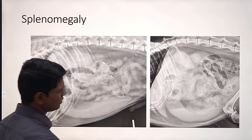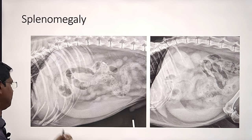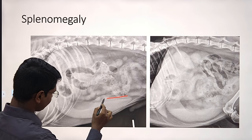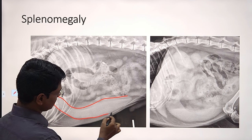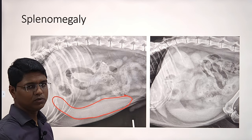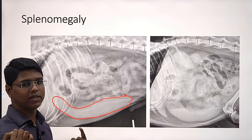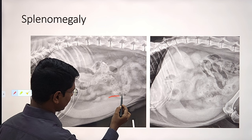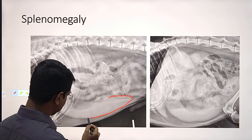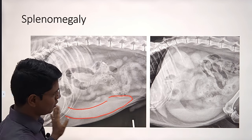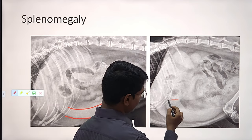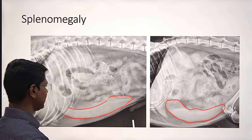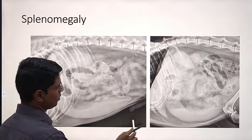You can only diagnose splenomegaly from the radiograph. The splenic margin is usually triangular and very sharp. Here you can see the spleen is enlarged along with rounding of the borders. This is rounding of the borders — splenomegaly. This is also a case of splenomegaly — rounding of the borders, splenic size is also enlarged.